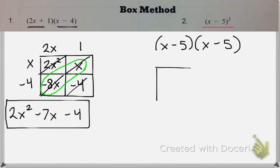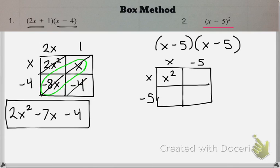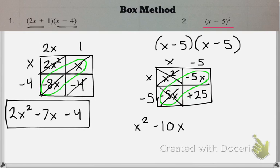So I'm going to do the box method again. So I have x and negative 5, x and negative 5. And then all I need to do is combine like terms. So I have x squared minus 10x plus 25.